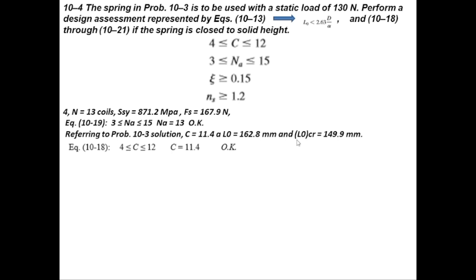C value and Na value are okay for this problem. Now let's calculate the value of zeta, which is equal to Fs divided by F minus 1. Fs is 167.9 N and static load F is 130 N, so putting the values gives you 0.29, which is greater than 0.15. This is also okay for this problem.